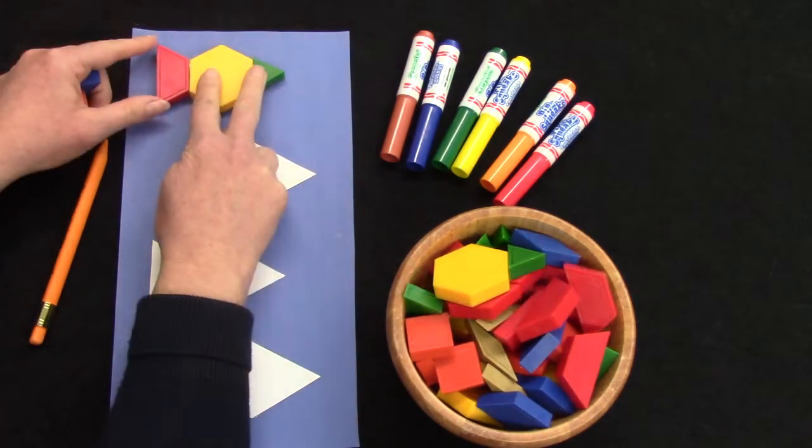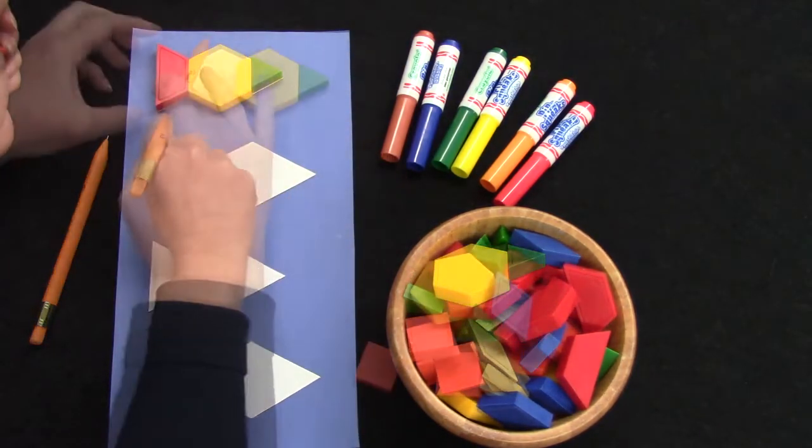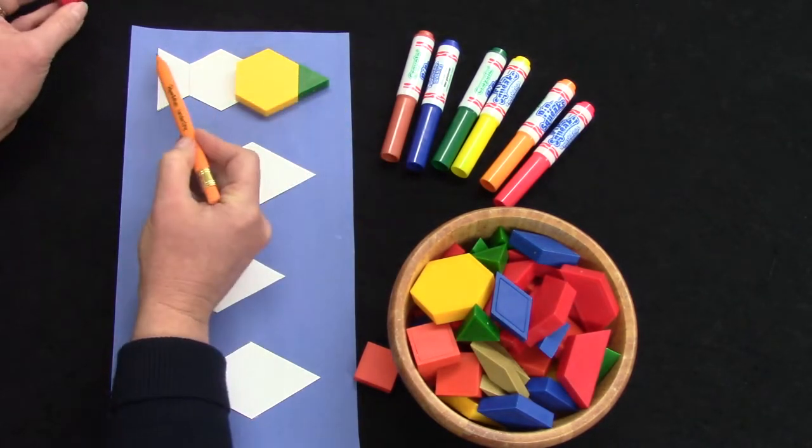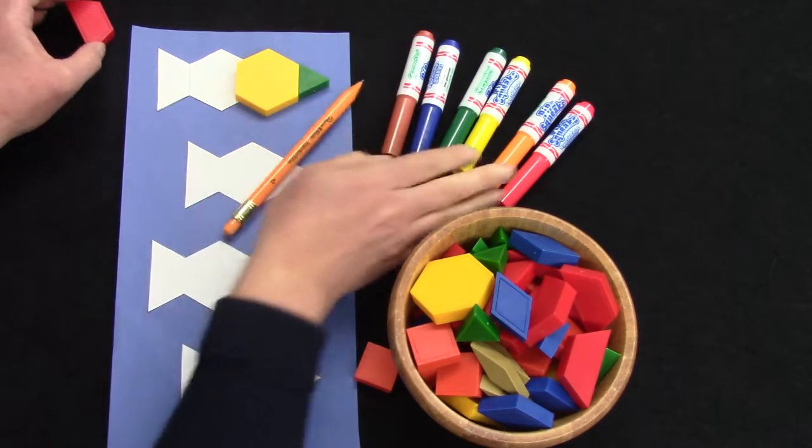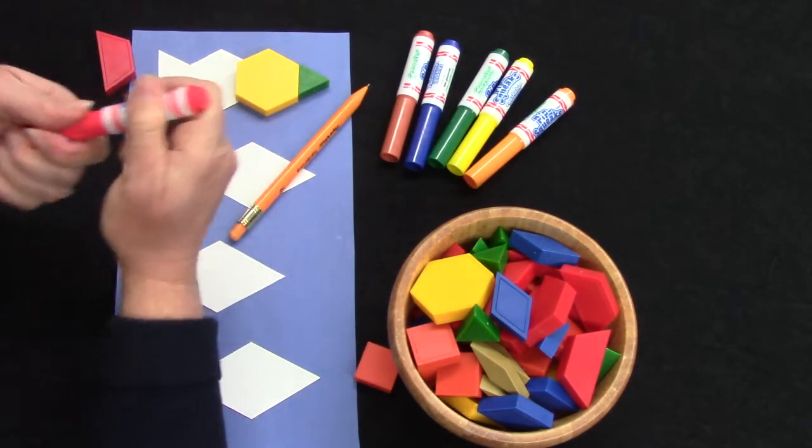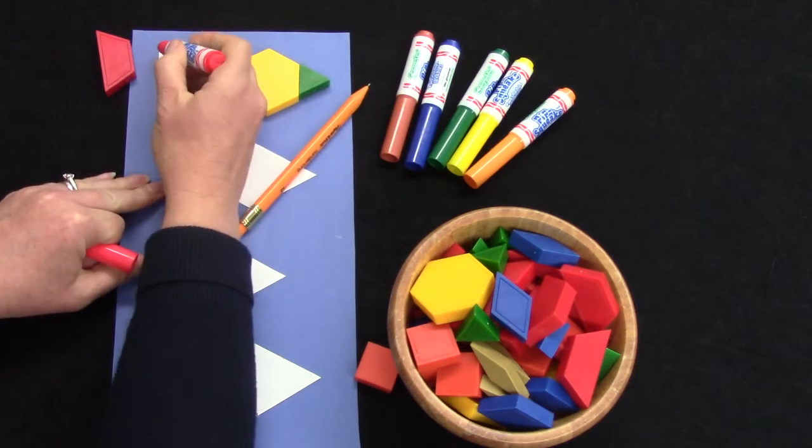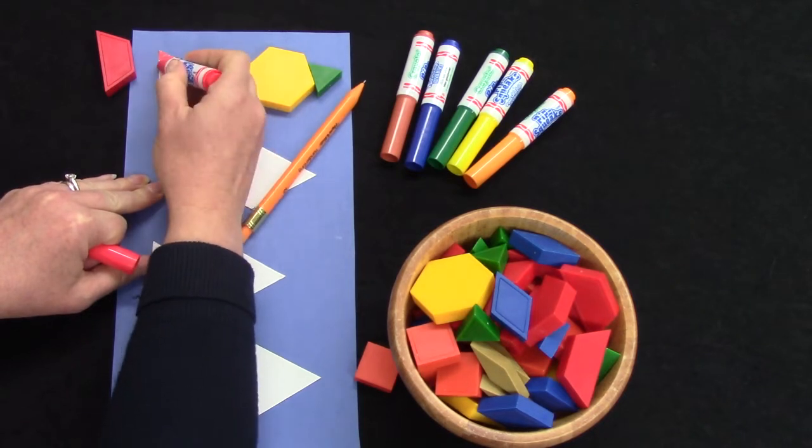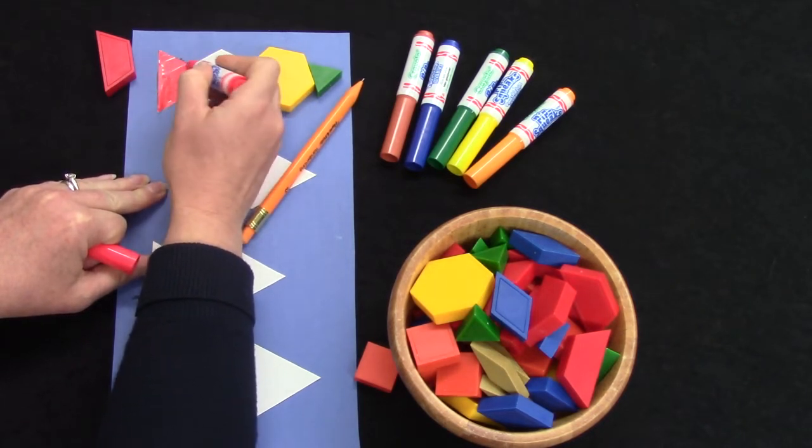I am going to use my pencil to trace my shapes so that I have made a little trapezoid, and then I'm going to take my red marker because my trapezoid is red and I am going to fill in that whole area with red so that I can see the four different ways that I do my pattern.